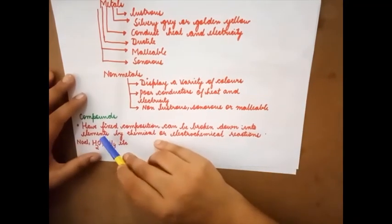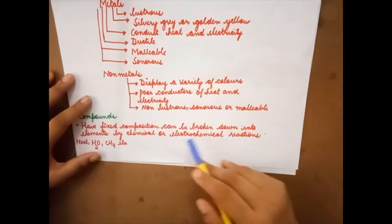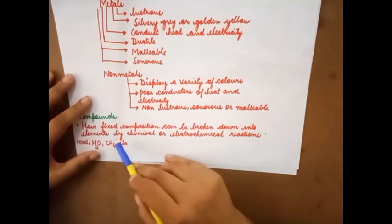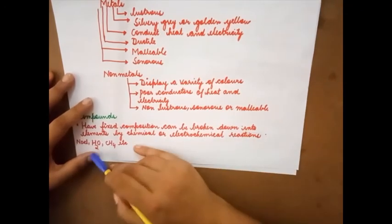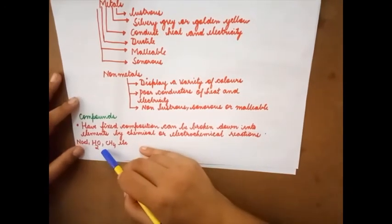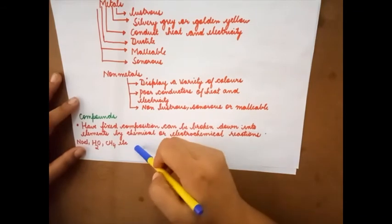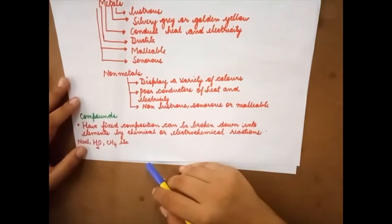Compounds. They have fixed composition. Can be broken down into elements by chemical or electrochemical reactions. Examples: sodium chloride, water, methane, etc. These are compounds.